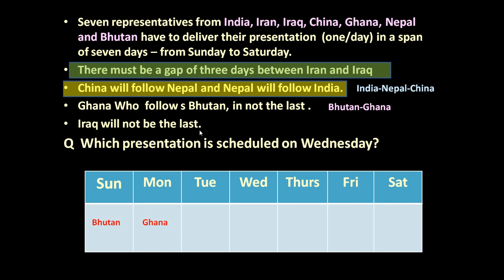Iraq will not be the last, so Iraq cannot occupy Saturday. Reading again: there must be a gap of three days between Iran and Iraq. So Iraq will be placed on Tuesday and Iran on Saturday — there is a gap of three days between them. Those three days in between will be occupied by India, Nepal, and China in that order. In this manner, the positions of all seven countries are fixed.